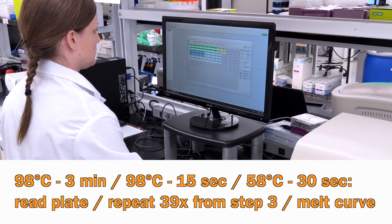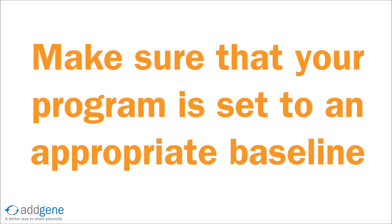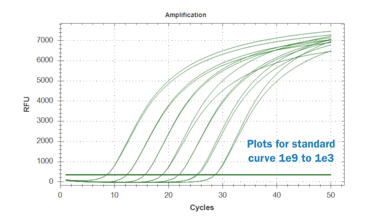Once your run is completed, use your instrument software to confirm you obtained good quality data. First, make sure your program is set to an appropriate baseline to ensure that small amounts of background signal detected in initial PCR cycles will be removed. Second, check your standard curve. Your linear correlation coefficient R² should be around 1 and your efficiency of amplification, which is calculated based on your slope, should be around 100%. Confirm that there is an appropriate difference in CT values between each dilution of your standard curve. A 10-fold dilution, for example, should be reflected by a CT difference of about 3.3.